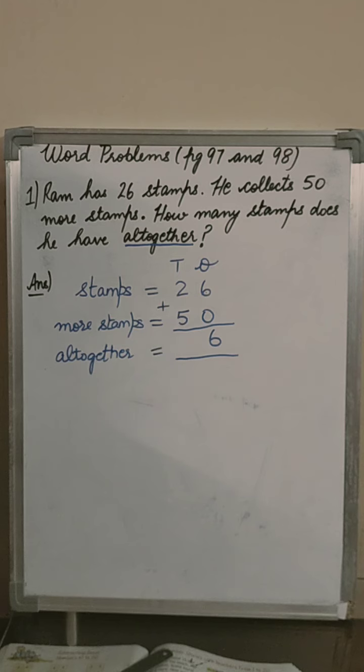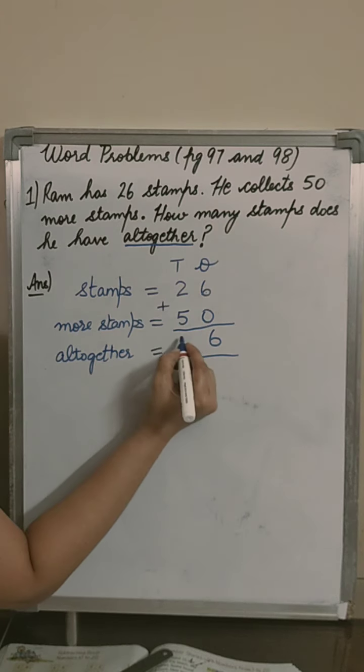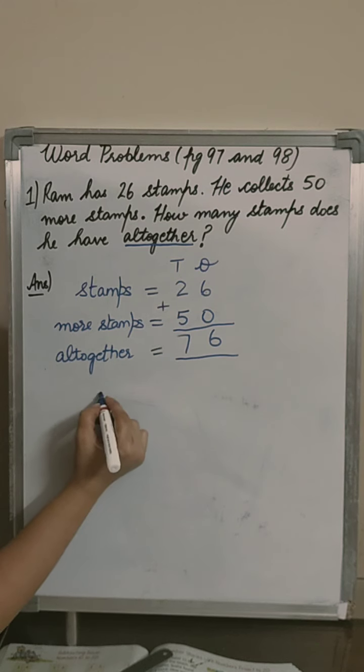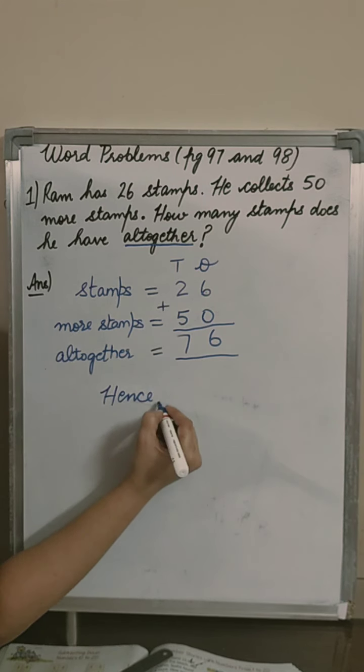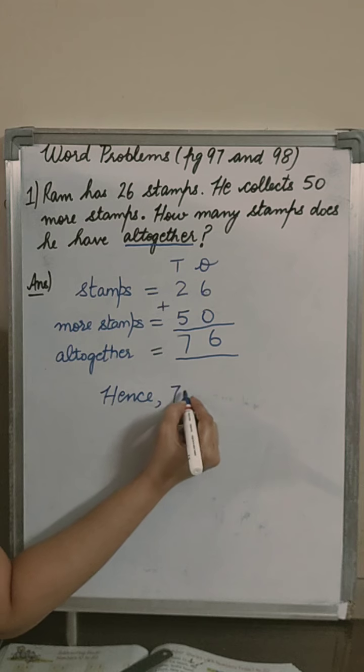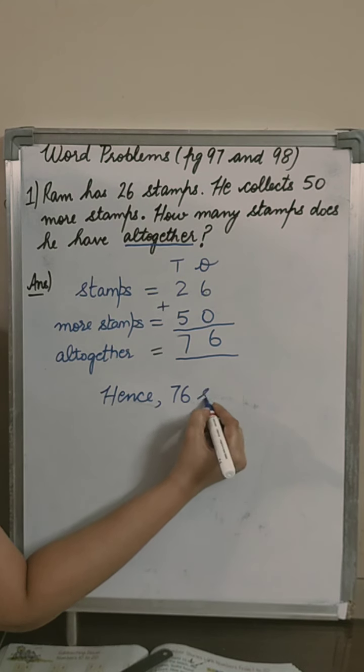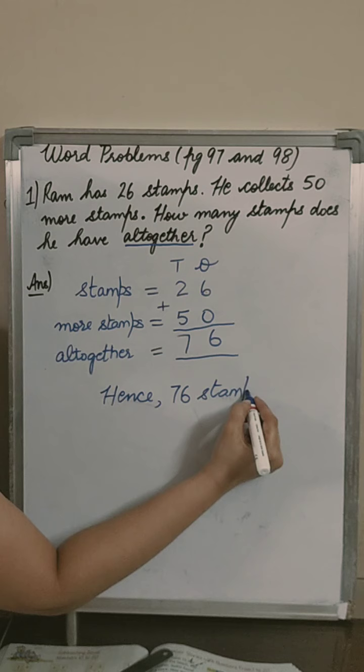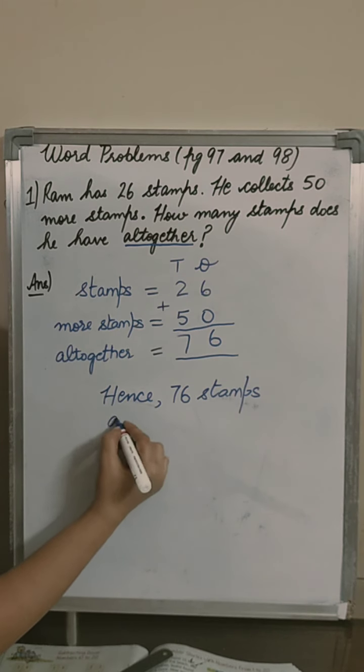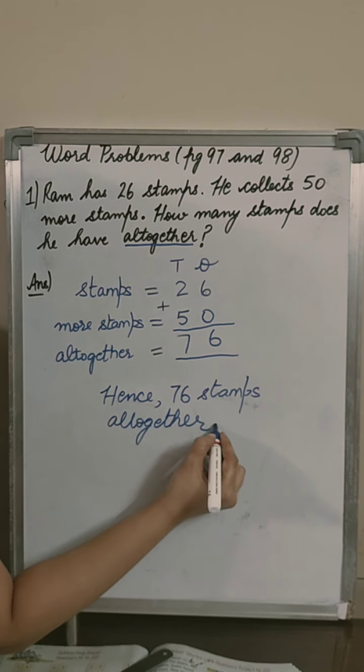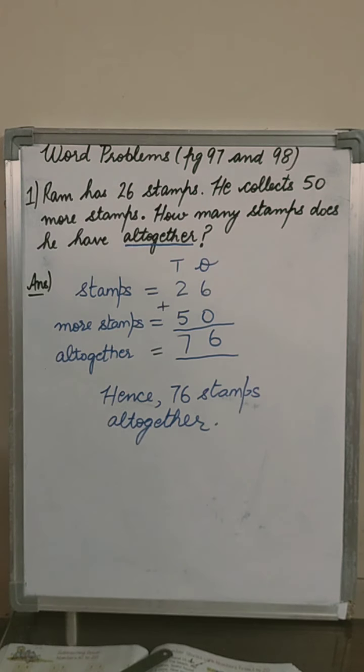Keep 2 in your mind, 5 on the fingers and we have to count forward from 2. Yes, 2, 3, 4, 5, 6, 7. So what will come? 7. Hence, we have, Ram has 76 stamps altogether. This is the way to solve the problem sum.